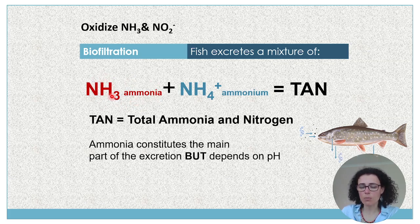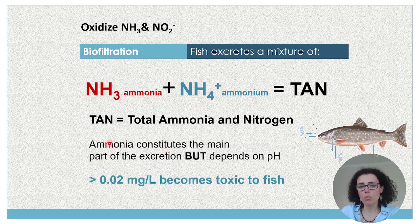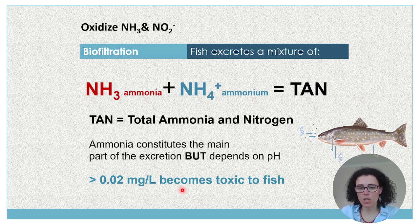As the pH increases, ammonia in the molecular form increases and ammonium in the cation form decreases. You need to keep in mind that levels as low as 0.02 mg per liter can become toxic to fish. This will depend on the species, but as a rule of thumb you want to keep these values below this amount.